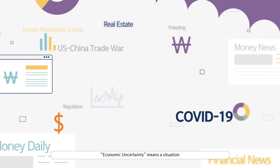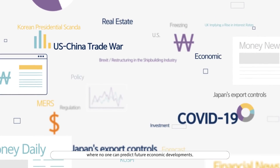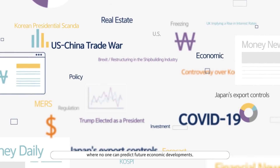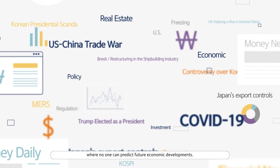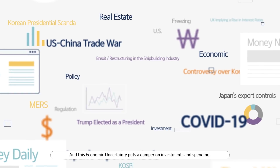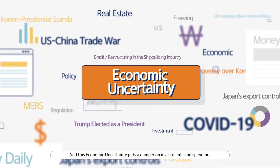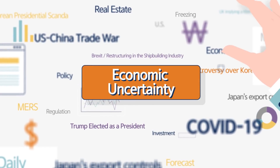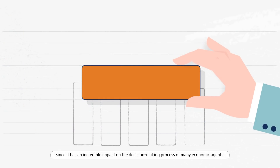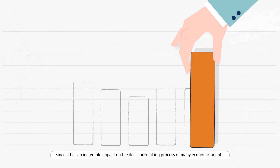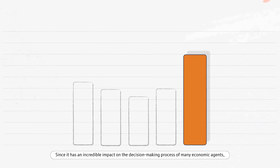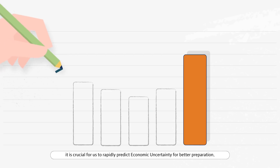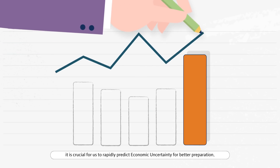Economic uncertainty means a situation where no one can predict future economic developments, and this economic uncertainty puts a damper on investments and spending. Since it has an incredible impact on the decision-making process of many economic agents, it is crucial for us to rapidly predict economic uncertainty for better preparations.